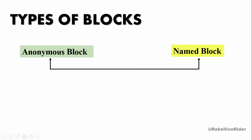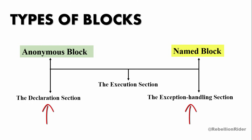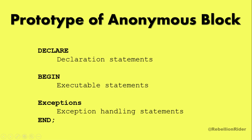Both types of PL-SQL blocks are further divided into three different sections: the declaration section, the execution section, and the exception handling section. The execution section is the only mandatory section of blocks, whereas declaration and exception handling sections are optional. Here is the basic prototype of an anonymous PL-SQL block.